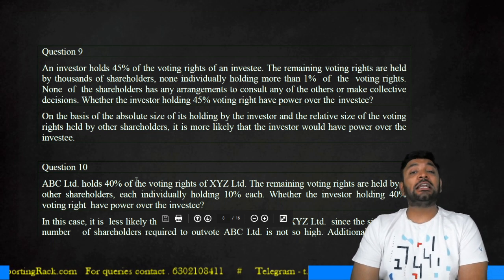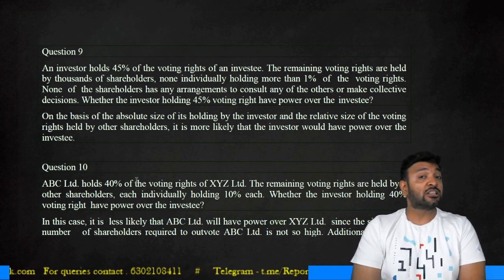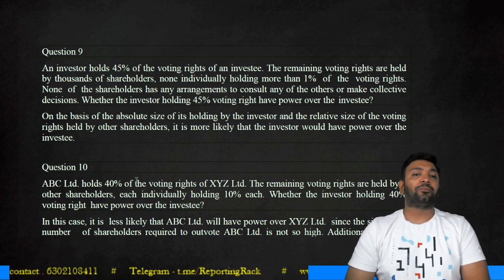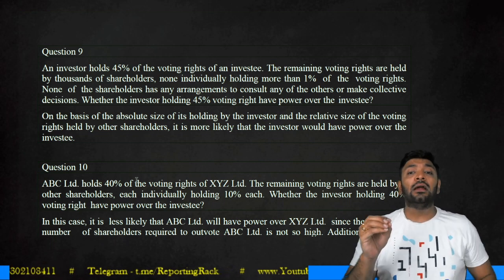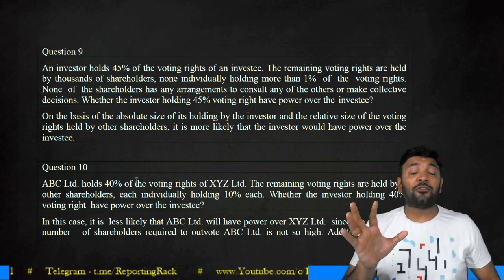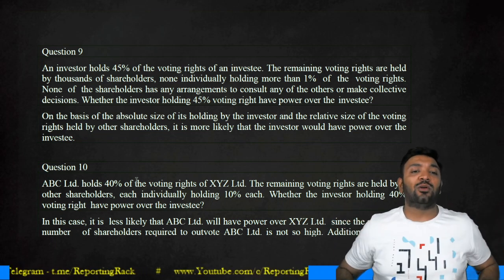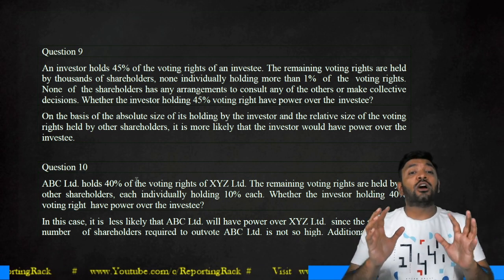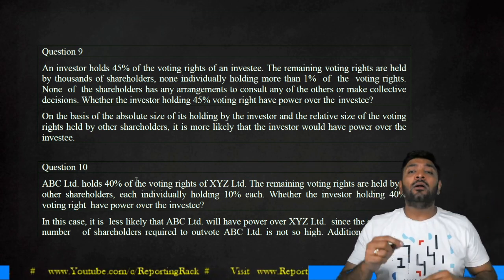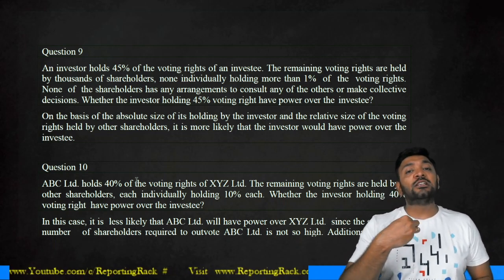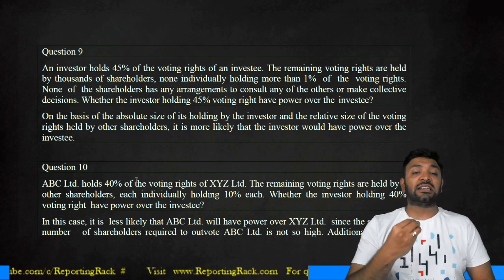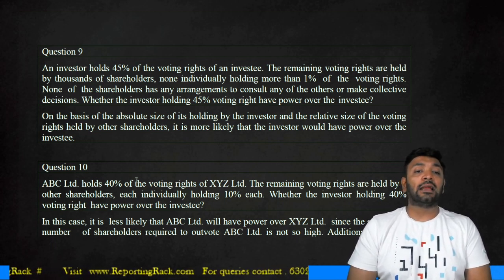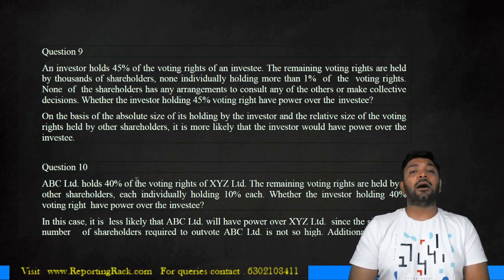Final illustration: an investor holds 45% of voting rights in an investee. 45% is not more than 50%, but the remaining voting rights are held by thousands of shareholders, none of them holding more than 1%. None of the shareholders had any arrangement to consult each other or make collective decisions — the remaining 55% cannot come together and make one collective decision. Whether the investor of 45% has power over the investee — yes, 100%, because of the size of the holding. He has 45% and none of the others even have 1%. Therefore, on the basis of the absolute size of its holding and the relative size of voting rights of other shareholders, it is likely that the investor has power over the investee — this is de facto control.